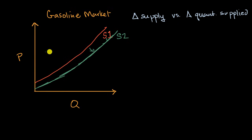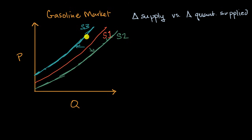Likewise, you could have a change in supply the other way, where you go to the left and up. We could call that supply curve three. These would all represent shifts in supply, or changes in supply. When we talk about quantity supplied, we're talking about movement along one of these curves.